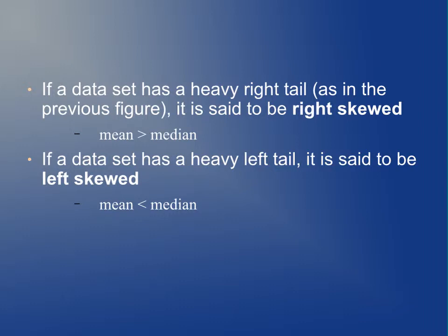In general, if a data set has a heavy right tail, as we saw in the previous figure, it's said to be right skewed. In that case, the mean will be larger than the median. If a data set has a heavy left tail, then it's said to be left skewed. In those cases, the mean will be less than the median.